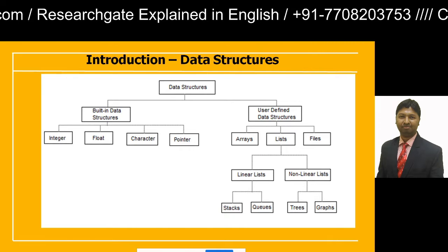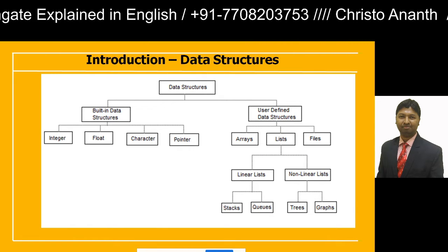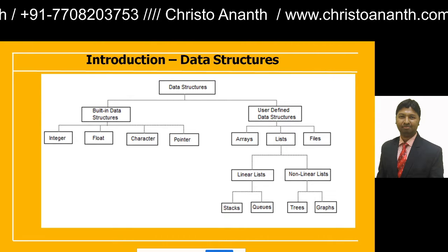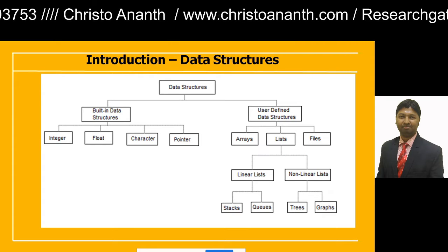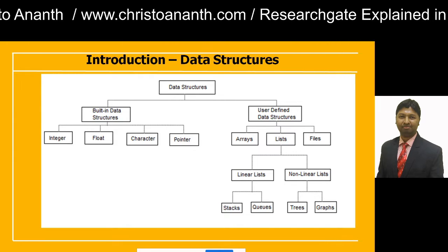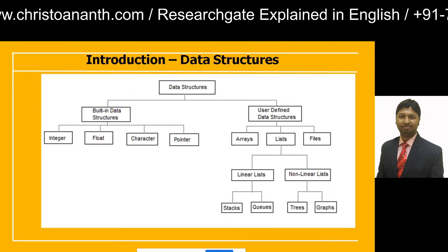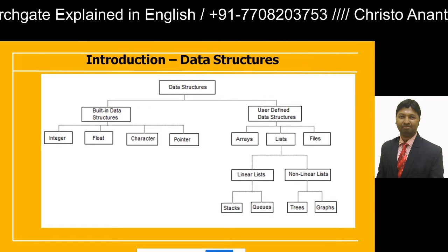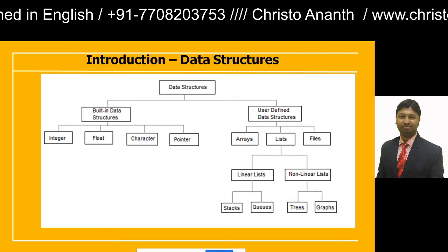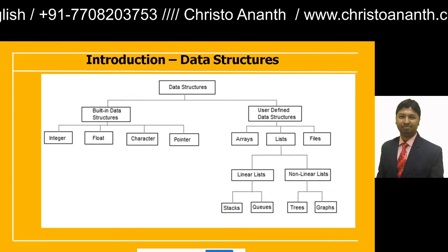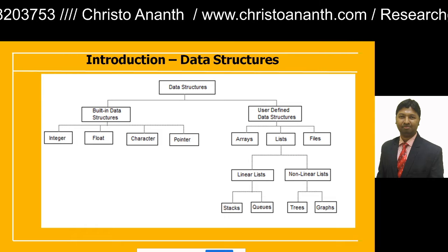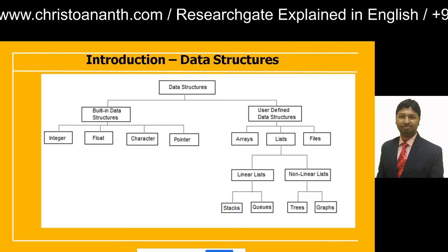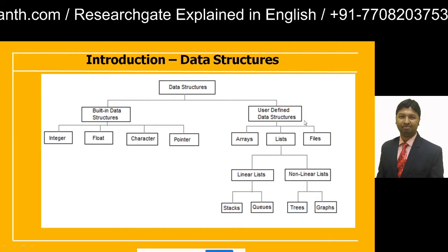When you classify data structures, we have built-in data structures and user-defined data structures. Within built-in data structures, you have integer, float, character and pointer. Within user-defined data structures, we have arrays, lists and files. If you consider lists, we have linear as well as non-linear lists. Within linear lists, we have stacks and queues, while with non-linear lists, we have trees and graphs. This is the classification of data structures.